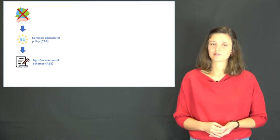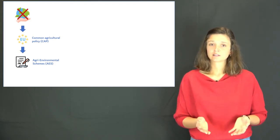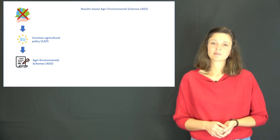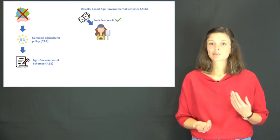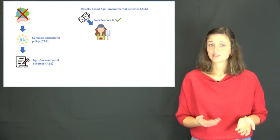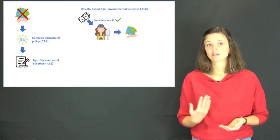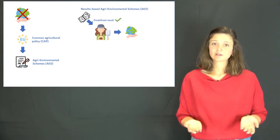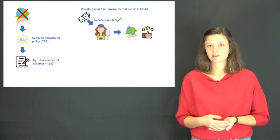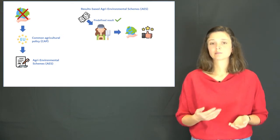Therefore, a new approach was developed. In so-called results-based agri-environmental schemes, farmers are paid for reaching a certain predefined result. Thereby, environmental benefits might occur more successfully. Additionally, farmers are paid for their skills as land managers and not for simply following rules.